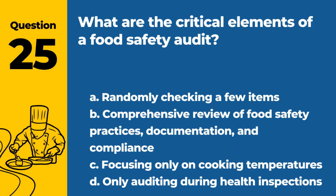Question 25. What are the critical elements of a food safety audit? A. Randomly checking a few items. B. Comprehensive review of food safety practices, documentation, and compliance. C. Focusing only on cooking temperatures. D. Only auditing during health inspections. Answer: B. A food safety audit should involve a thorough review of all practices, documentation, and compliance with food safety standards.